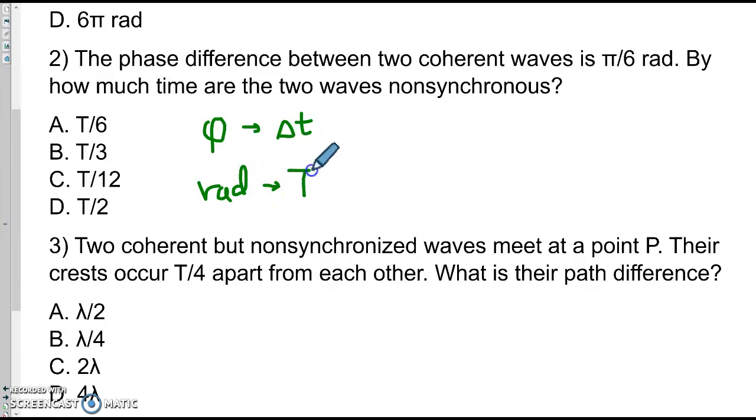Or we can think of it as changing from radians into some fraction of a period. So again, we start with the given value, pi over 6 radians.